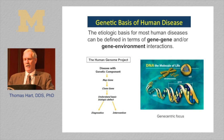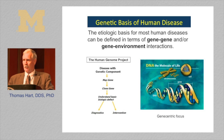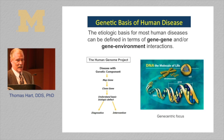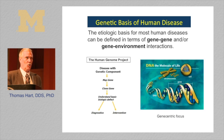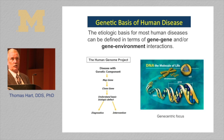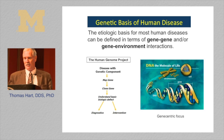Nowadays it's not a rash statement to say the etiologic basis of most human diseases can be defined in terms of gene-gene and/or gene-environment interactions. This concept, which was a little more radical in the late 1980s and early 1990s when the Human Genome Project was conceived, was a fundamental driving force for the project. The idea was that if genetics underlies disease, you need to identify the genes responsible, clone them, and figure out how they function to develop better diagnostic and treatment ideologies.